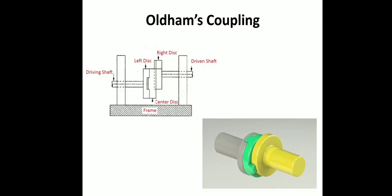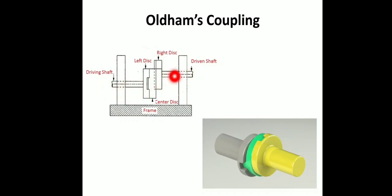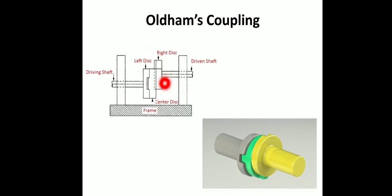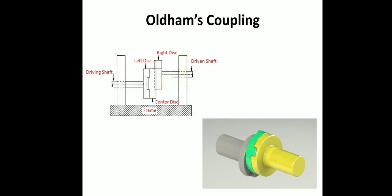The Oldham coupling is used to connect two parallel shafts with some eccentricity. When the driving shaft and driven shaft are not perfectly aligned, we use the Oldham coupling instead of a flange coupling. The Oldham coupling allows power transmission between shafts with parallel misalignment.